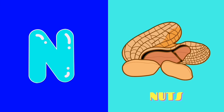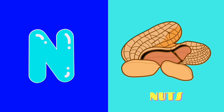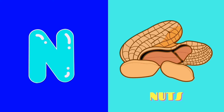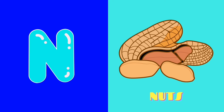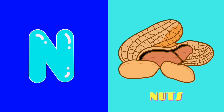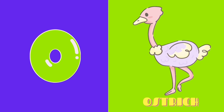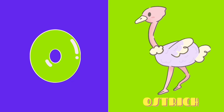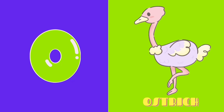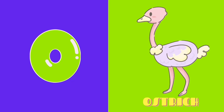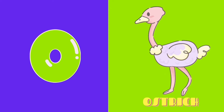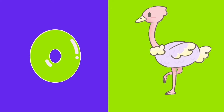N is for Nerds. N-N-Nerds, N-N-Nerds, N-Nerds. O is for Ostrich. O-O-Ostrich, O-O-Ostrich, O-Ostrich.